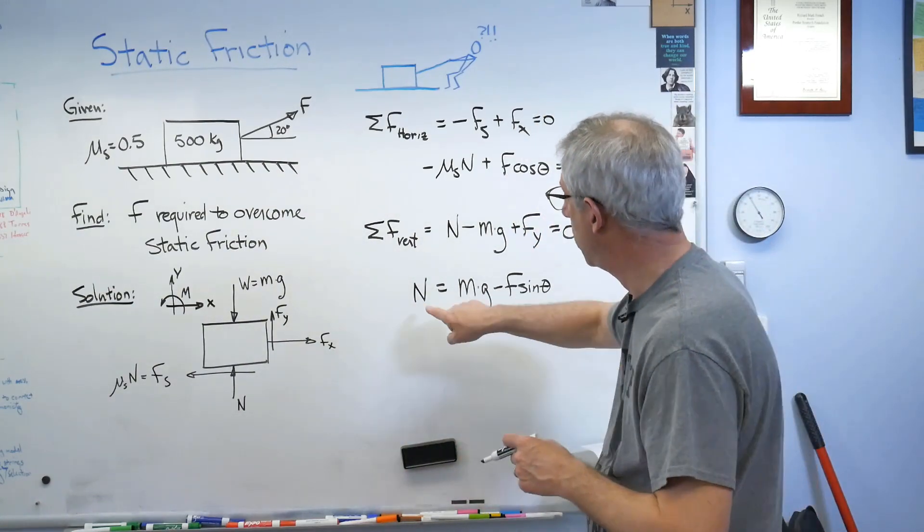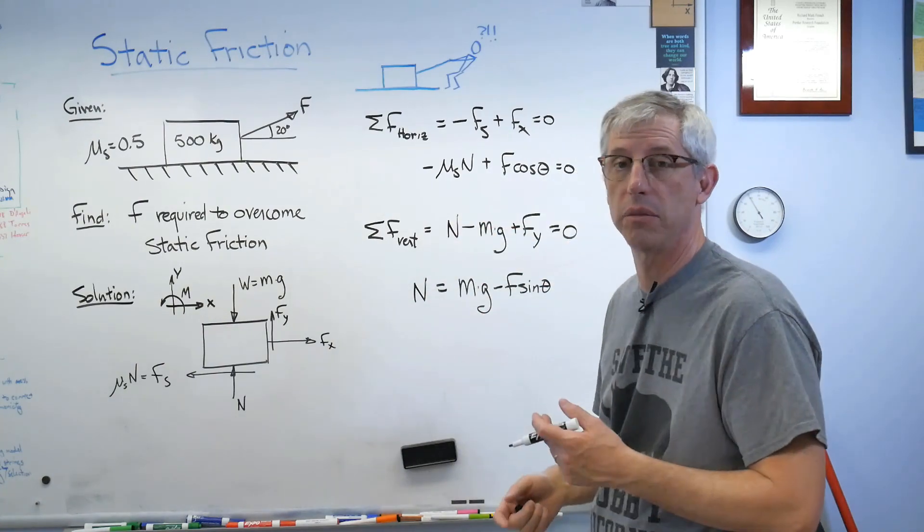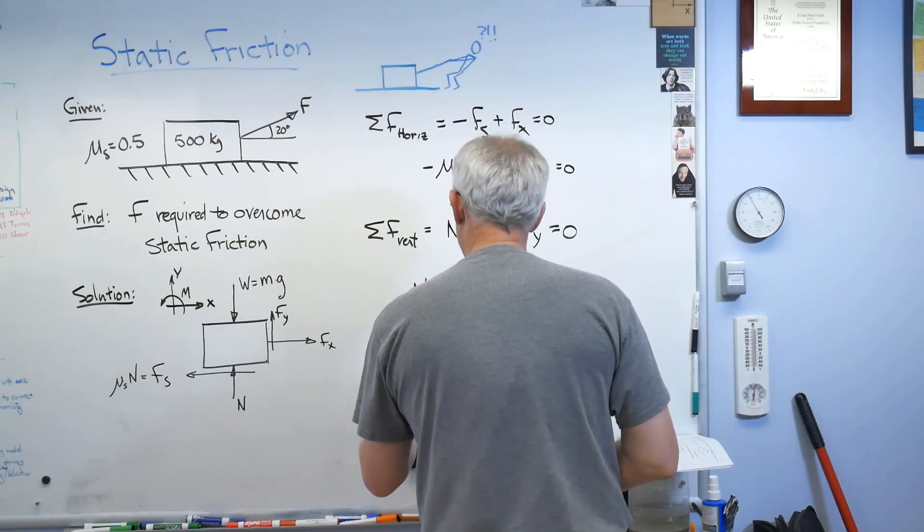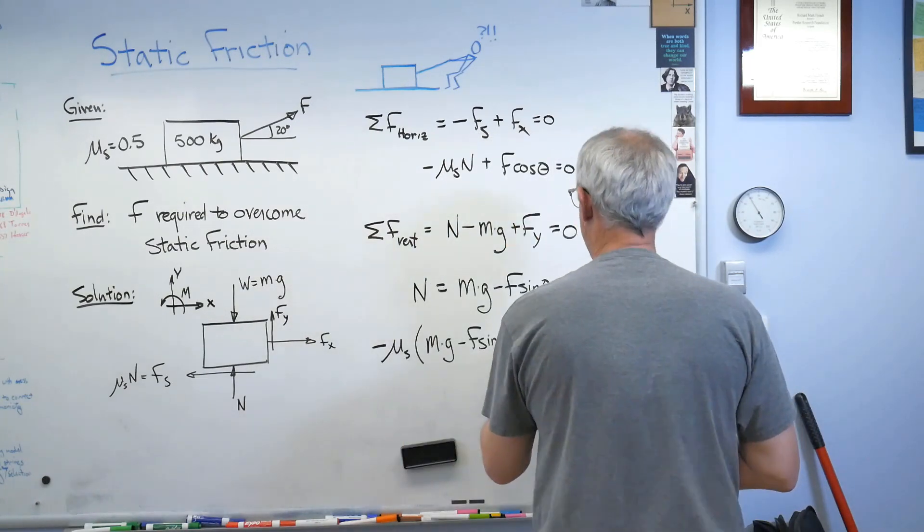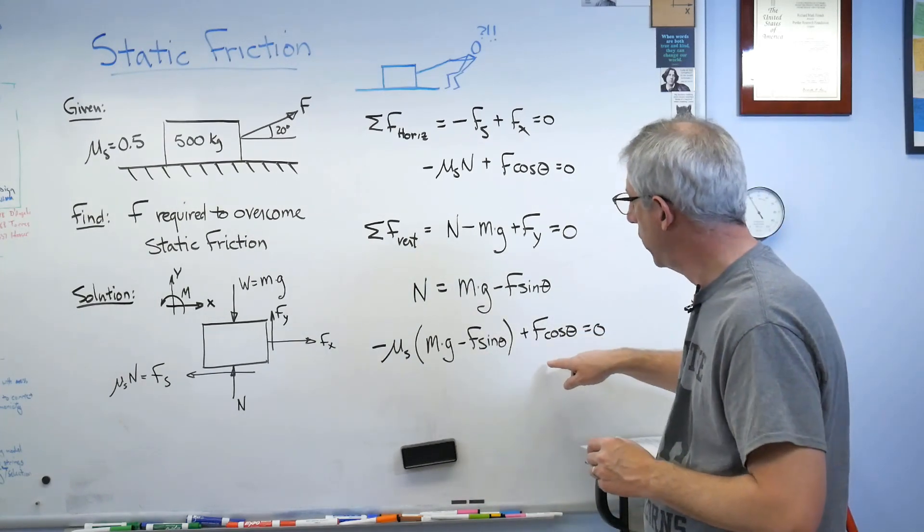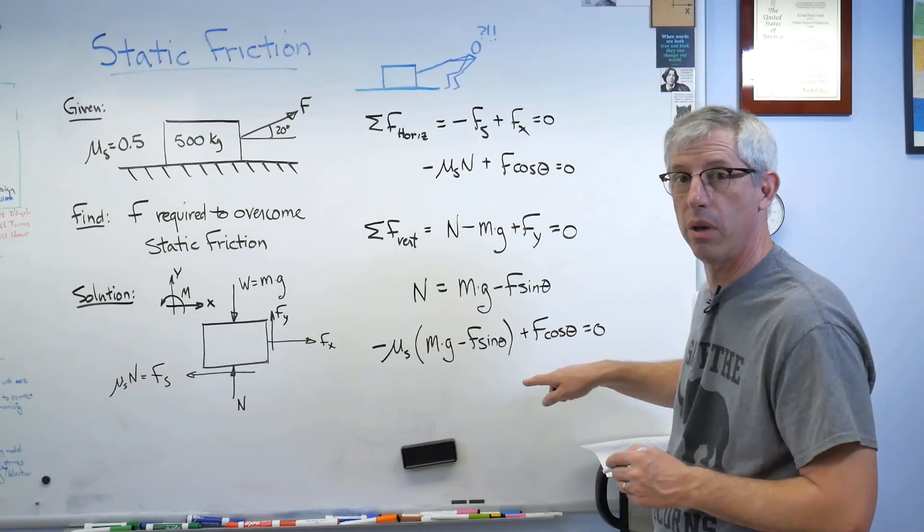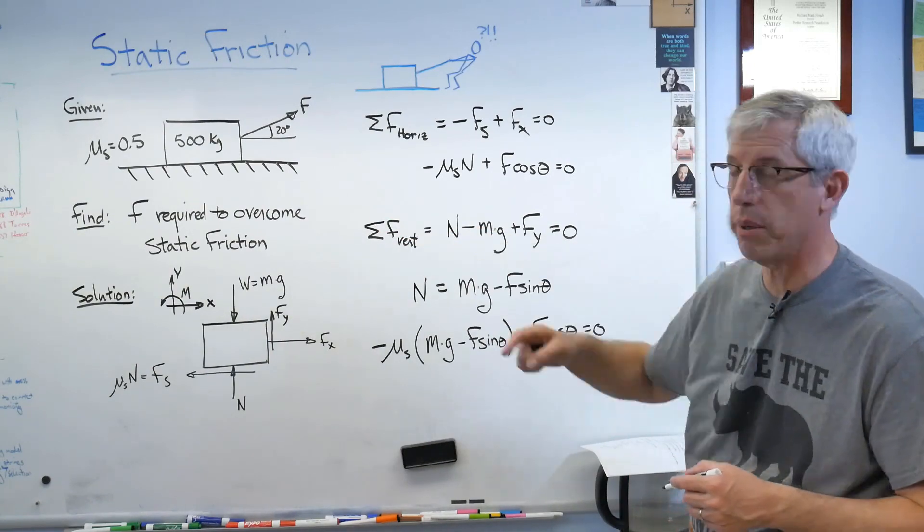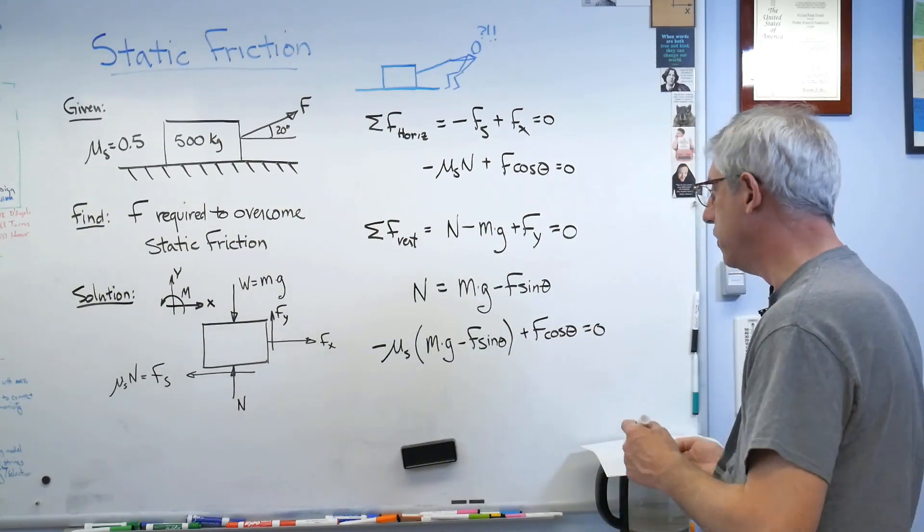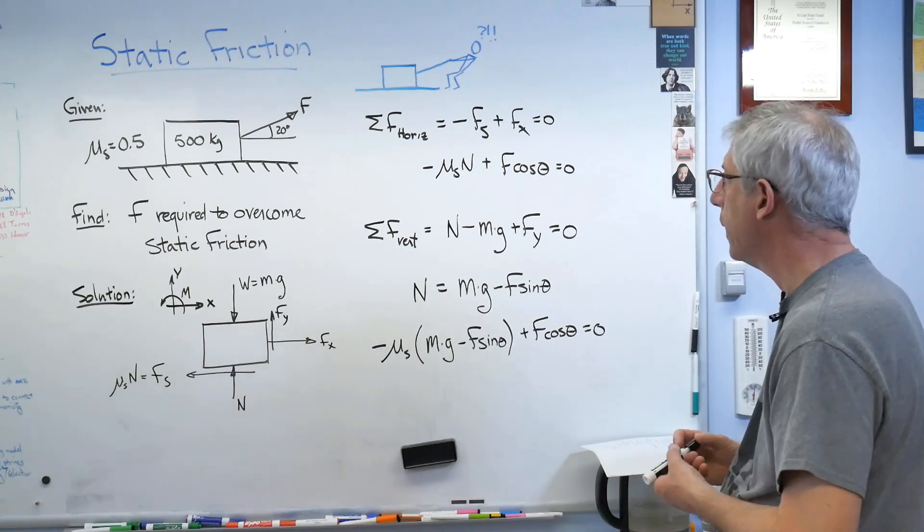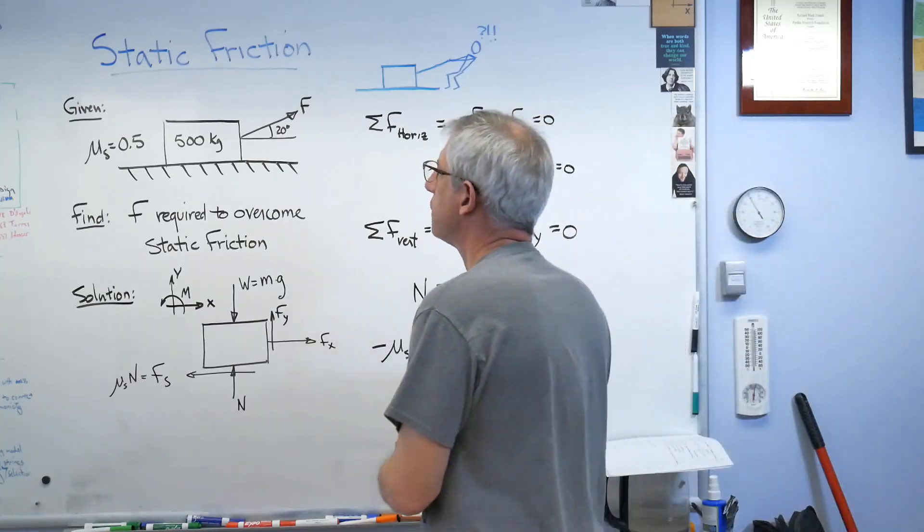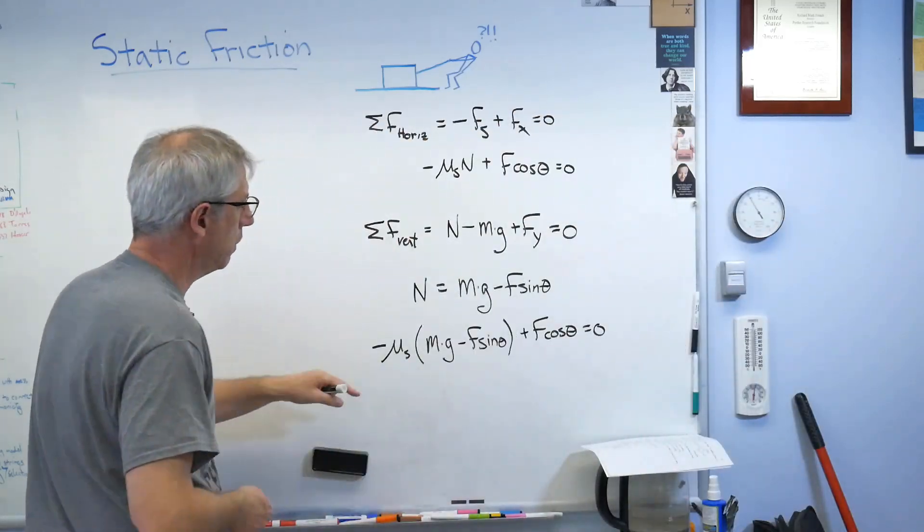So let's substitute n into here. See what we get. There we go. Let's see. I've got one equation with one unknown, and my unknown is f. Well, that's what I'm trying to find. So now, all I've got to do is figure out f. That's just algebra now. So let me erase this part, and we'll solve this.